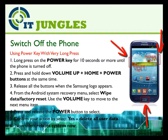From the Android system recovery menu, select wipe data factory reset. You can use the volume key to move the selection up and down on the menu items. Press the power button to select. Now confirm your action by selecting yes, delete all user data, and finally select reboot system now.